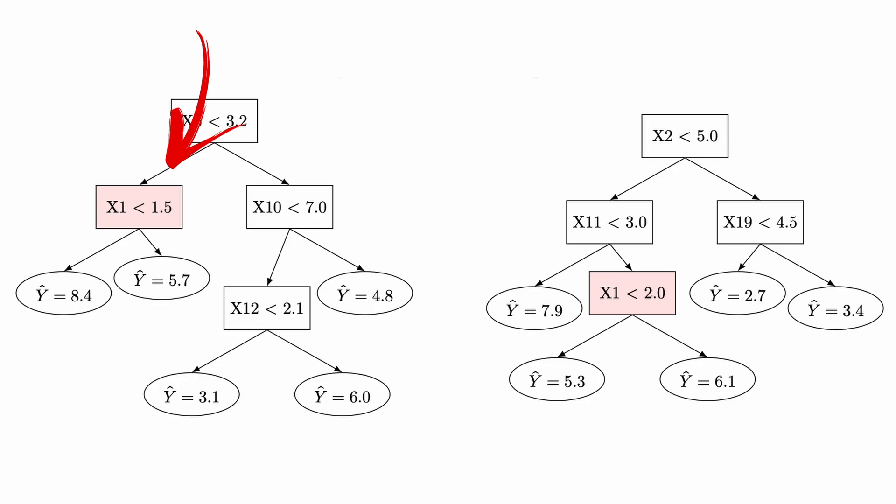So a tree that used to say 'if x1 is less than 5, predict y-hat = 8.4, otherwise 5.7' will now essentially randomly assign those predictions. You do that for every single tree where x1 is a predictor, then average the predicted scores and compare them to the original model. If performance drops significantly after shuffling, that tells you x1 was important.